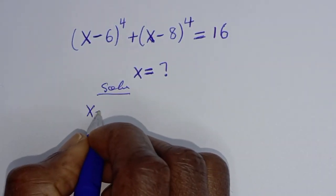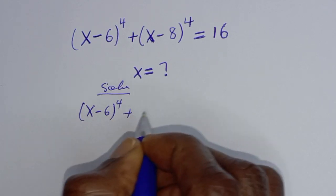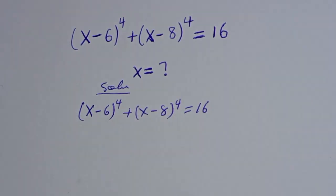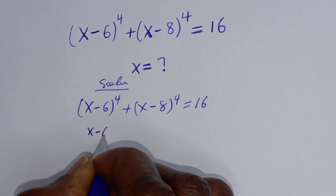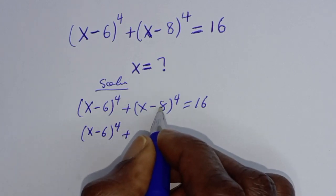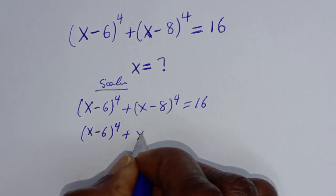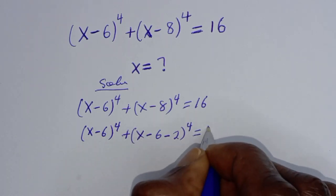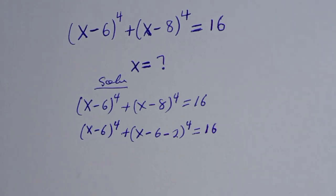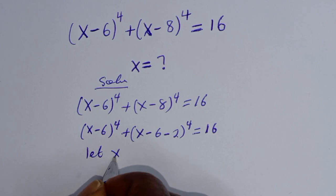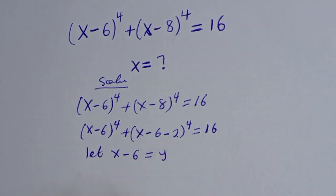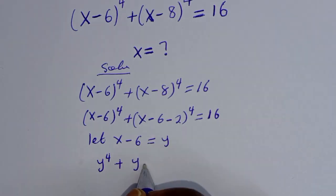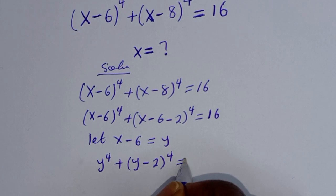Here we have x minus 6 to the power of 4 plus x minus 8 to the power of 4 is equal to 16. This can be written as x minus 6 to the power of 4 plus x minus 6 minus 2 to the power of 4 is equal to 16. Let x minus 6 equal y, so this becomes y to the power of 4 plus y minus 2 to the power of 4 is equal to 16.